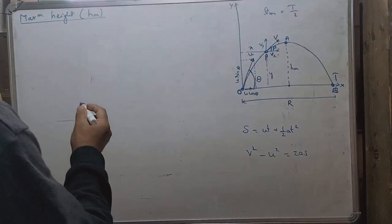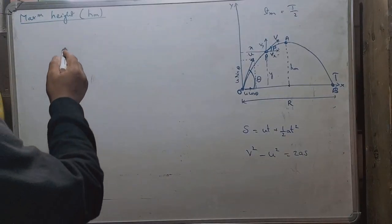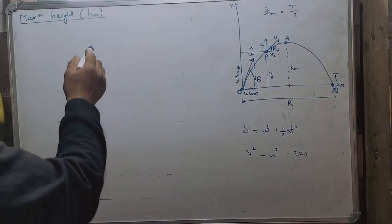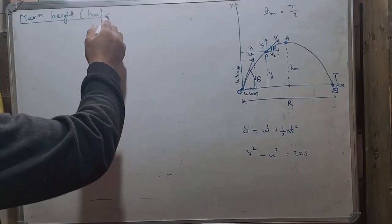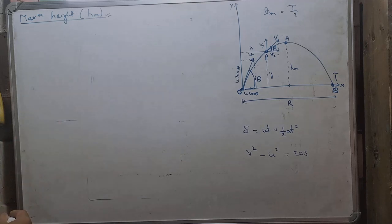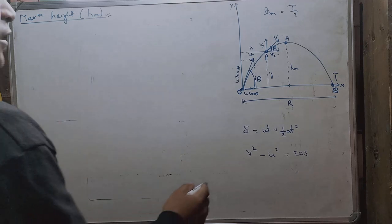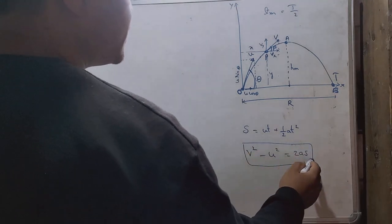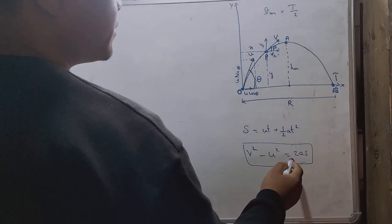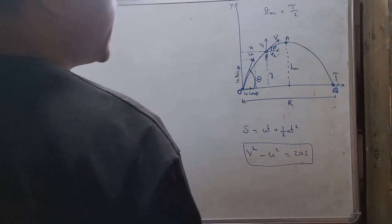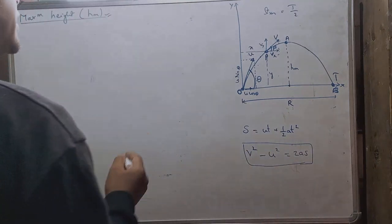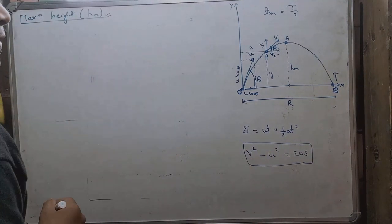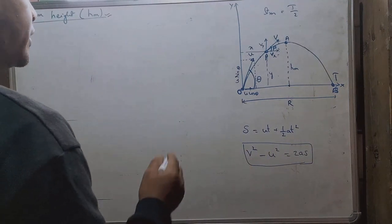We denote the maximum height of a projectile by HM. We will use the equation of motion V² minus U² = 2aS to get the expression for maximum height.